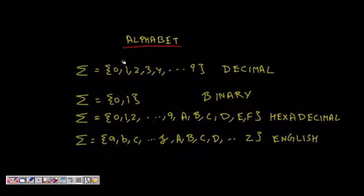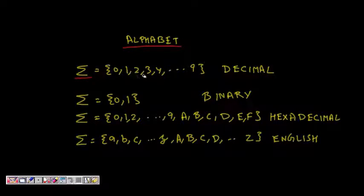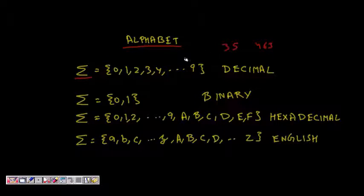An alphabet is denoted by sigma. For example, for the decimal number system, the alphabet is the set of numbers 0 through 9. So if you want to write any decimal number like 35, 4, or 63, you have to use symbols from this alphabet.